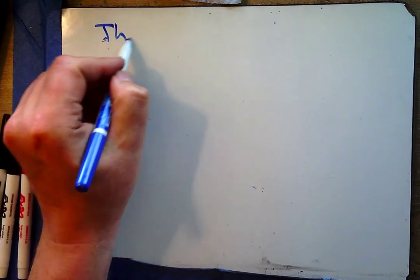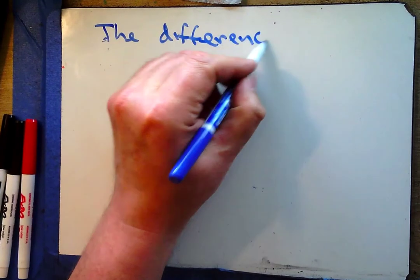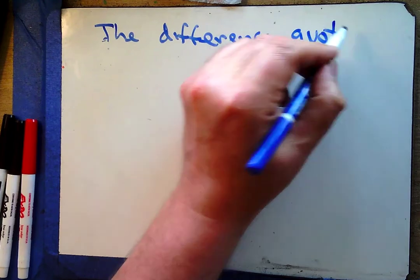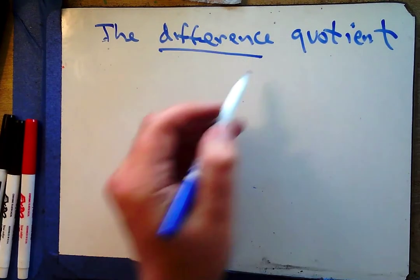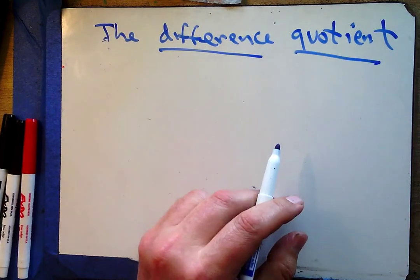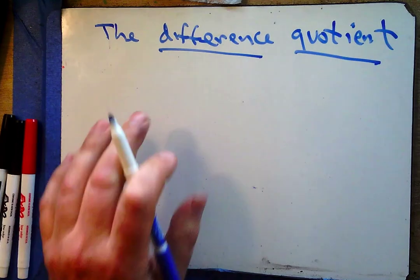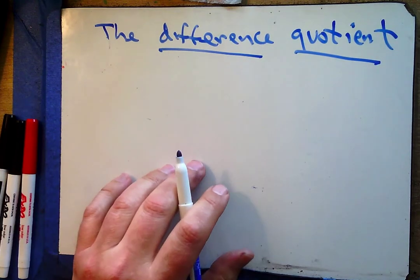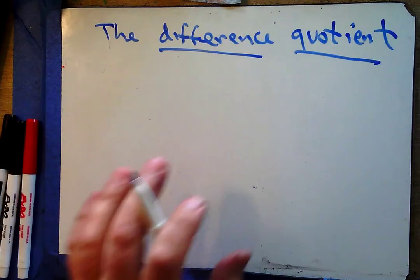Today we get to look at the difference quotient. The cool thing about the difference quotient is it has some subtraction and some dividing — that's why it's called the difference quotient. It turns out that the difference quotient is kind of the foundation of calculus, so we really need it.